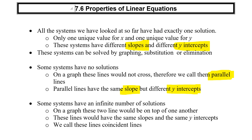And sometimes we've got infinite solutions — more than one, more than two, more than three. If you were to graph these two lines, they would literally be on top of one another. So if you've got an infinite number of solutions, the two lines are on top of one another, meaning they are the exact same line. They would have the same slope and the same y-intercept.